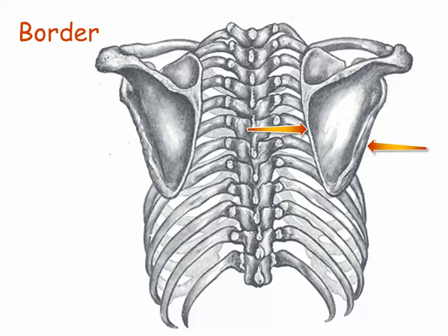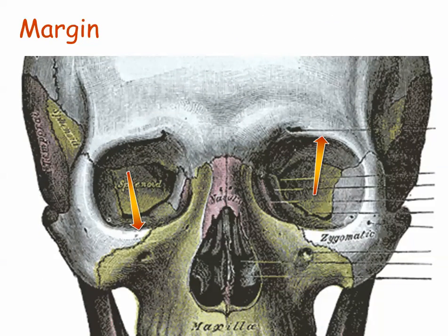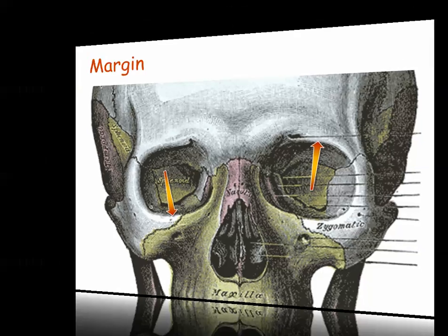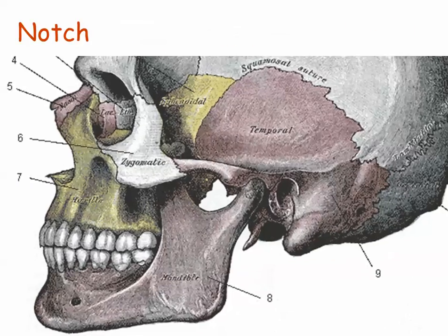Some skeletal features are the outer edges or boundaries of a bone. A straight edge or boundary of a bone is called a border — here we can see the medial border and the lateral border of the scapula, or shoulder blade. An edge of a flat bone or flat area can also be called a margin, as in the margins around the socket or orbit of the eye. An angle is an inside or outside corner along the boundary of a bone. A notch is a V-like cutout of the margin or edge of a flat area — it looks a little like a bite has been taken out of the bone.